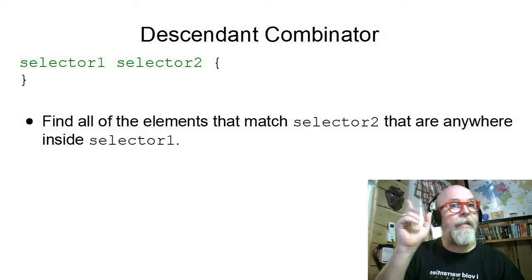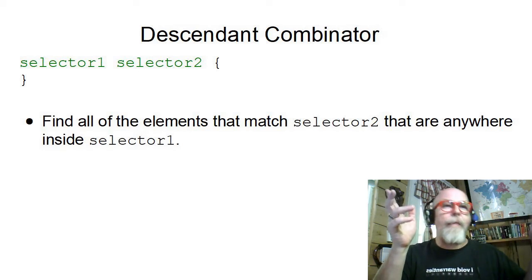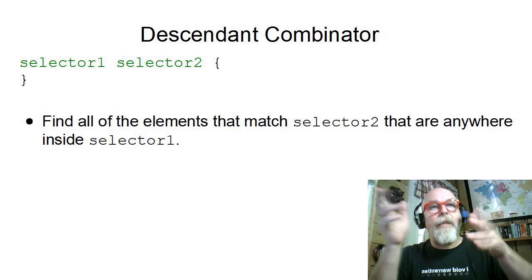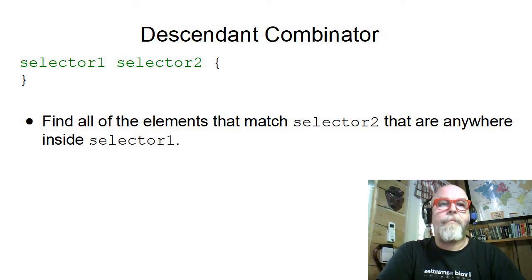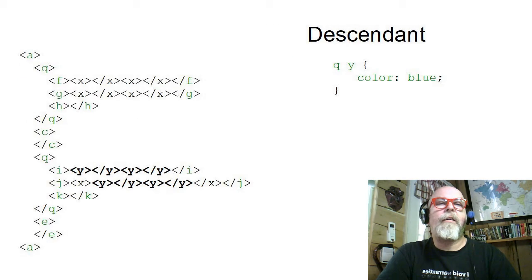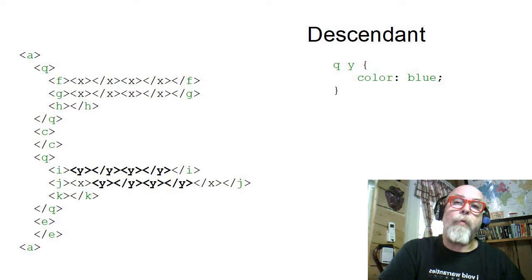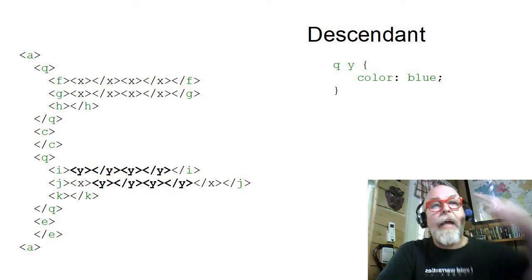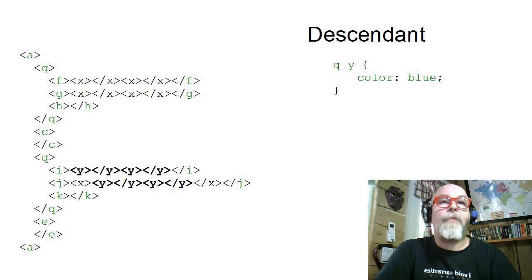It finds any descendant of type 2 that are in type 1. If you have three types, it would find all of the type 3s inside of type 2s inside of type 1s. The Descendant Combinator is a space. So the Descendant Combinator of Q space Y would find all of the Y tags inside the Q tag, and you can see those highlighted over here.